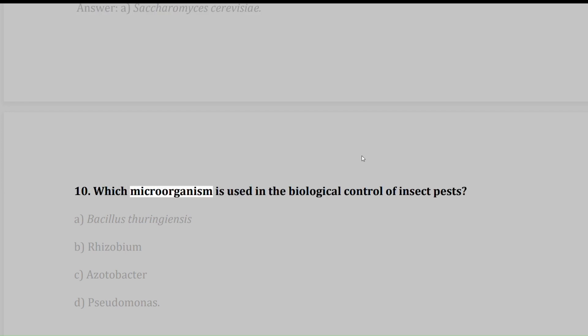10. Which microorganism is used in the biological control of insect pests? A. Bacillus thuringiensis, B. Rhizobium, C. Azotobacter, D. Pseudomonas. Answer: A. Bacillus thuringiensis.